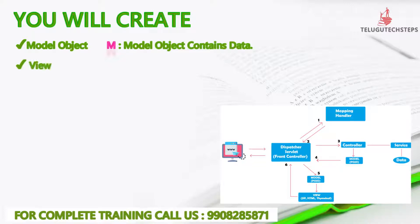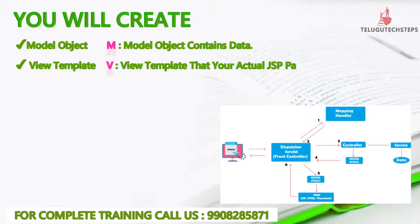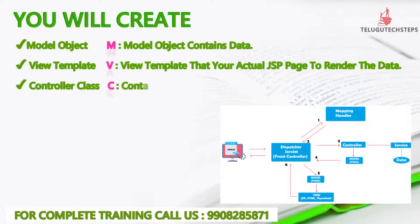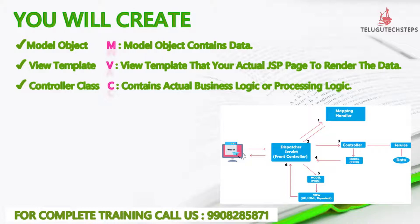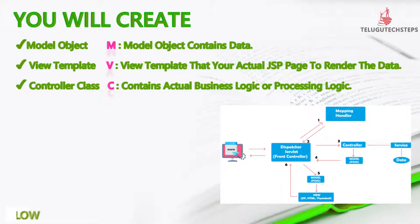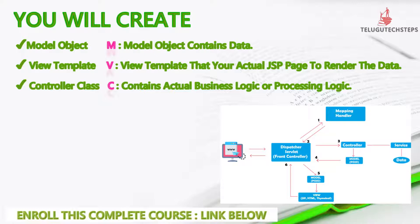In the MVC system, we create model objects, view templates, and controller classes. The model object contains the data. The view template contains the actual pages — we can say view pages to actually render and display the data. Coming to the C, the controller classes contain your actual business logic or processing logic.